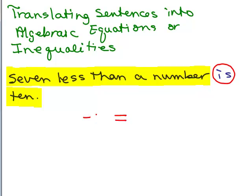So that means we're subtracting seven from a number. Let's call the number n. So n minus seven will be seven less than a number on the left side and then on the right side of the equal sign after the word 'is' is just the number ten. And now we've just translated seven less than a number is ten into an equation.